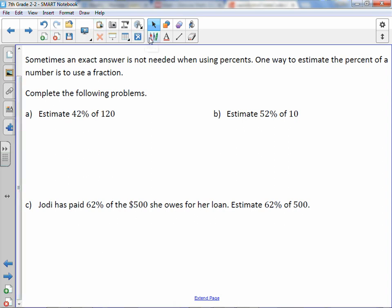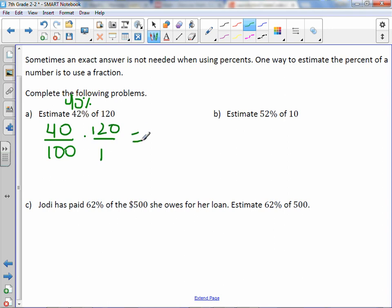So here we are estimating. Estimating is done in the beginning of a problem. Letter A, estimate 42% of 120. I can say that 42% is close to 40%. So 40% as a fraction is 40 over 100, multiply by that 120 over 1. 40 times 120, the shortcut is to do 4 times 12, which is 48, and add the two zeros over 100. Divide, and you get approximately 48. This symbol means approximately.